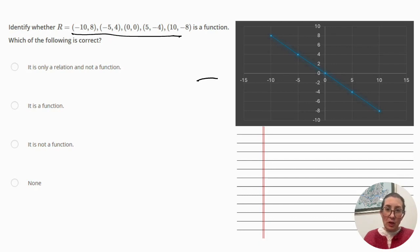In this graph, I have plotted the points and it's clearly an inverse linear function, which can be defined by the function y equals negative 4x over 5. Therefore, the range provided is a function.